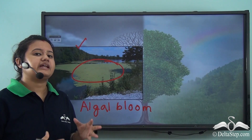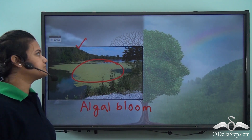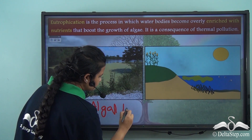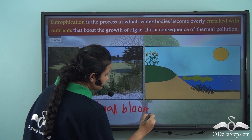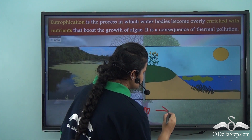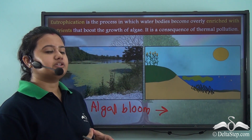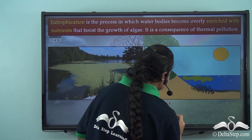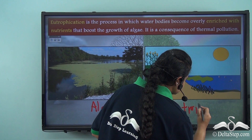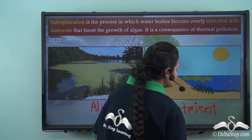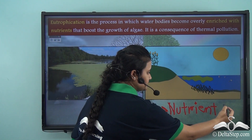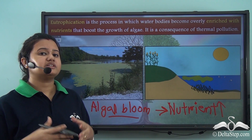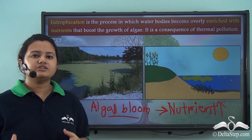What leads to the sudden and excessive growth of algae in this water body? Algal bloom or excessive growth of algae occurs due to an increase in the availability of nutrients in the water body — algal bloom often takes place in nutrient-rich water. So if the amount of nutrients in the water body increases, we can have algal bloom.